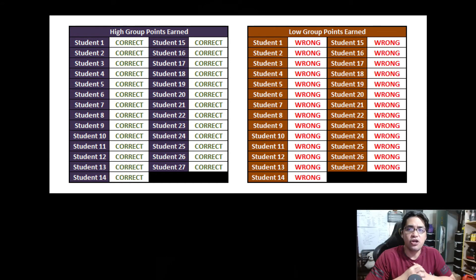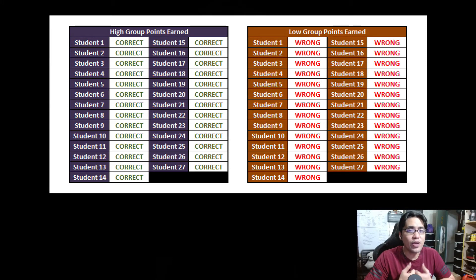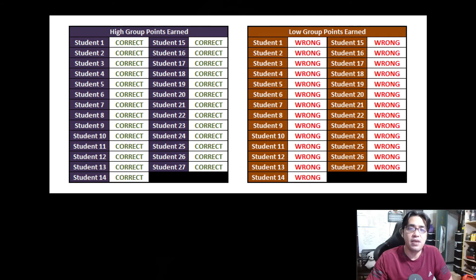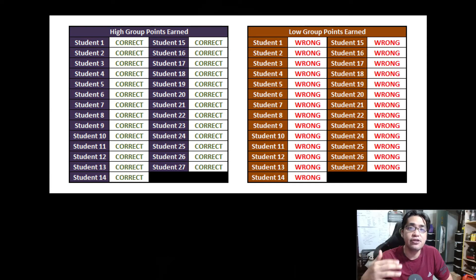Consider this illustration: on a particular test item, all students in the high group got the answer right and all students in the low group got it wrong. This situation is actually considered the most ideal. If the question is written correctly, all high-group students — who studied their lessons — should get it right, and all low-group students — who have not properly absorbed the lessons — should get it wrong. In this case, the difficulty is considered moderate, because around half of the total students in both groups got the answer right.